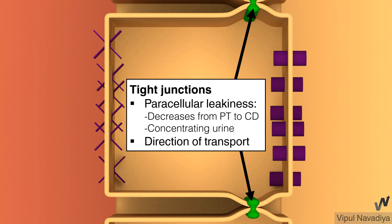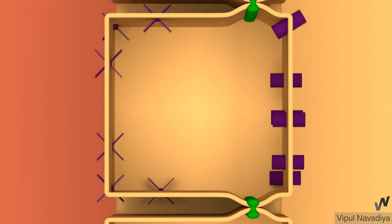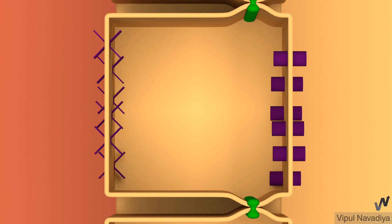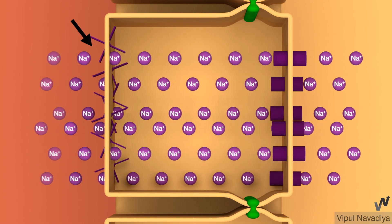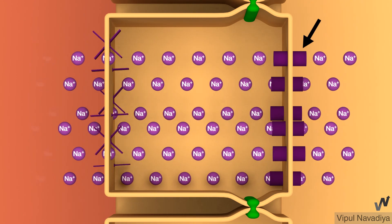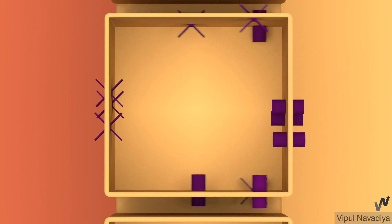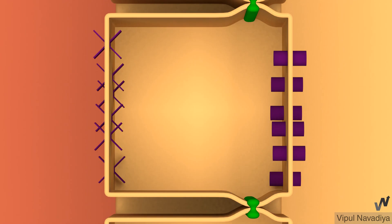Second, tight junctions help maintain ion transport in one direction. Cell membrane is fluidic in nature, so membrane-bound proteins move freely along the membrane. Tight junctions limit this movement, so transporters cannot go beyond the junctions and are confined to one side of the cell. This is critical for maintaining directional ion transport. For example, sodium ions move from the lumen into the interstitium because sodium-potassium-ATPase pumps are confined to the basolateral membrane and sodium channels are confined to the luminal membrane. Without tight junctions, all transport proteins would spread over the entire membrane and directional control would be lost.